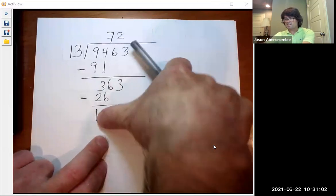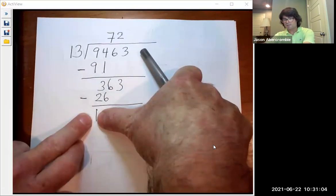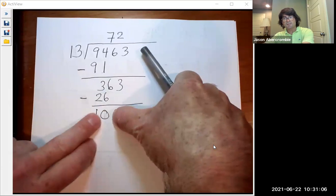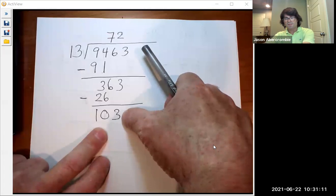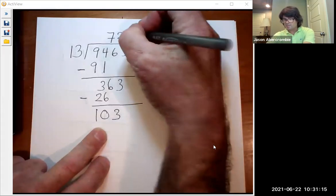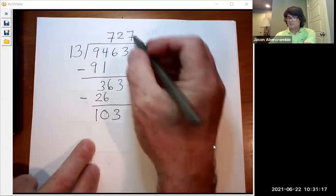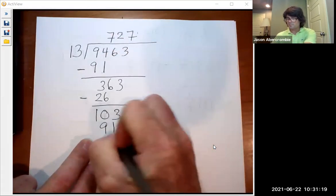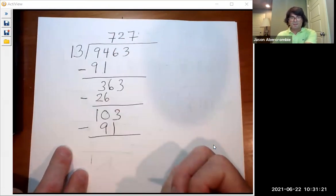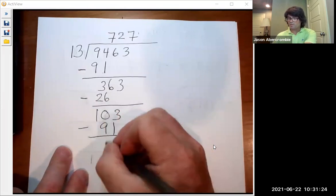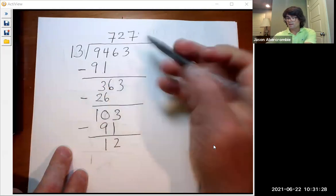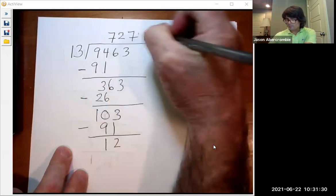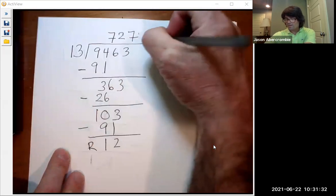So now we're going to ask, does 13 go into 1? Obviously not. Does 13 go into 10? Nope. Does 13 go into 103? Yes. I think 7 times 13 is still 91, so 13 goes into 103 seven times. 7 times 13 is 91. Subtract. We get 2. 10 minus 9 is 1. So now finally, does 13 go into 12? No. So that is my remainder, remainder 12.